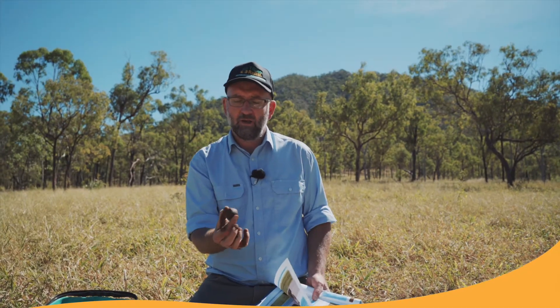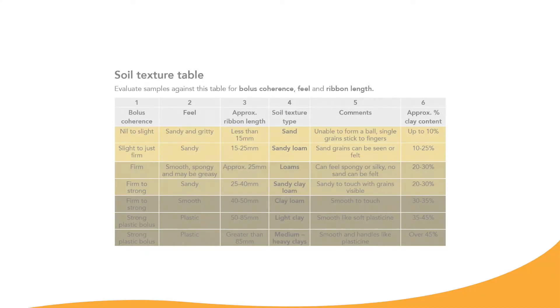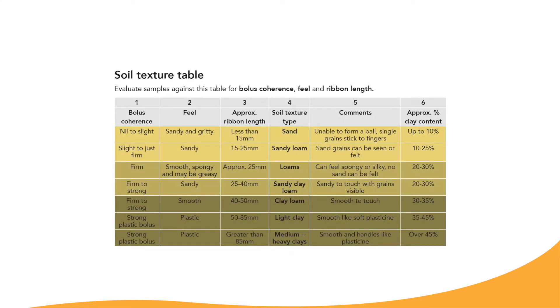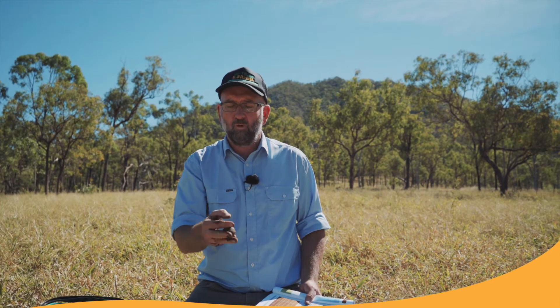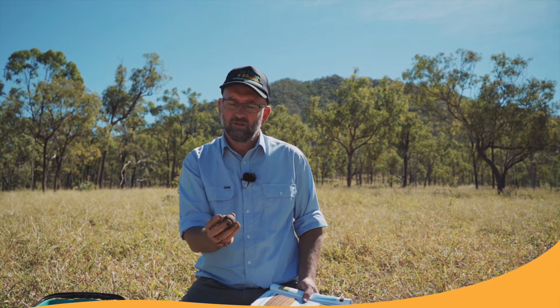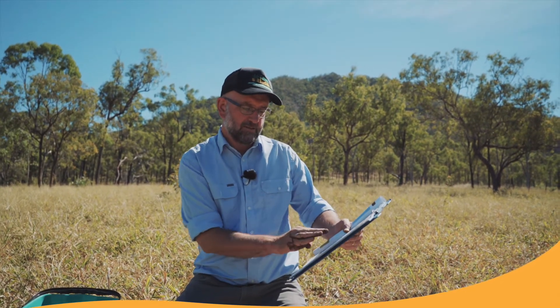The first step is to check the coherence, or the strength, of the ball. The RASH manual has a chart to help assess texture using that sample. You want to know whether the ball will fall apart easily, whether it holds together quite well and doesn't break easily, or whether it's really strong and feels like plasticine. Evaluate that and look down the chart to see which category the ball falls into.